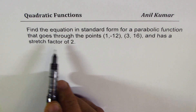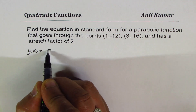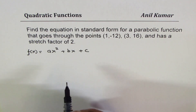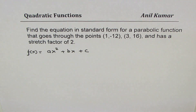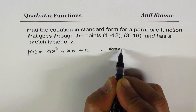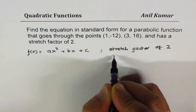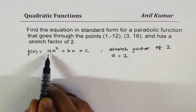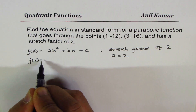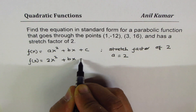When we say parabolic function in standard form, it really means we are looking for a function f(x) = ax² + bx + c. We are given a stretch factor of 2, which means a is equal to 2. The leading coefficient is actually the stretch factor. So we can write our function as f(x) = 2x² + bx + c.